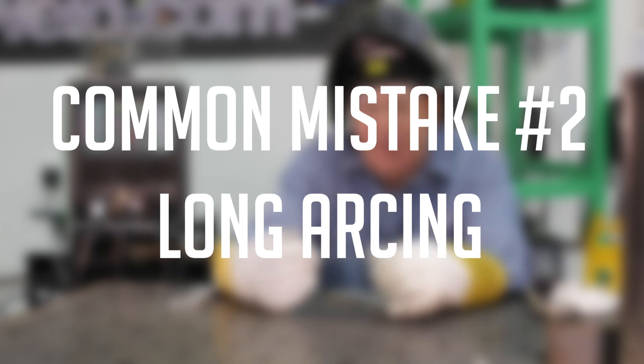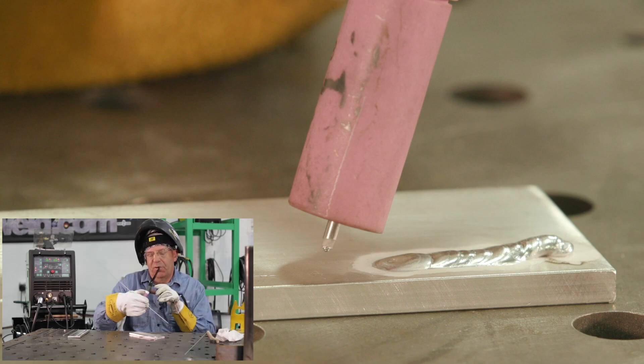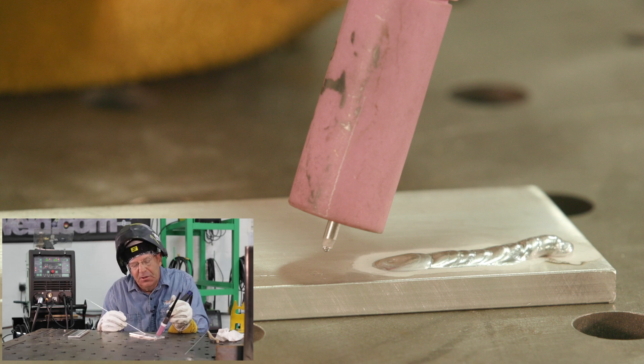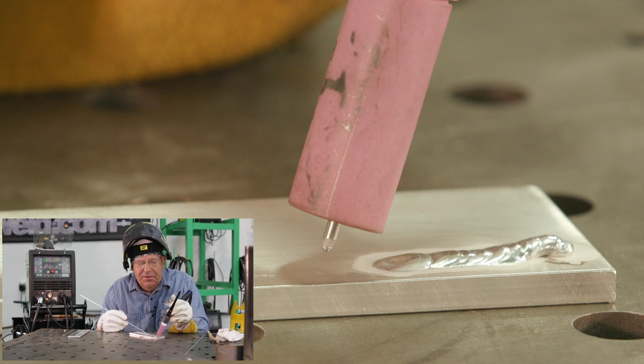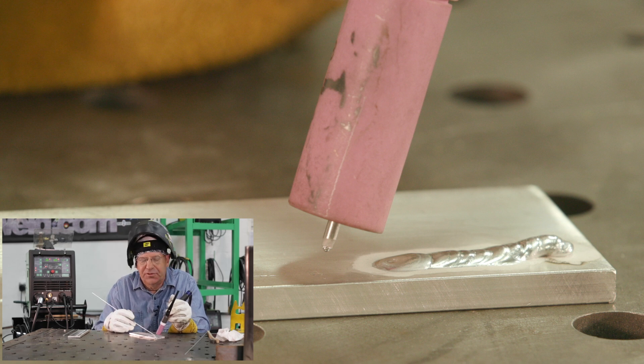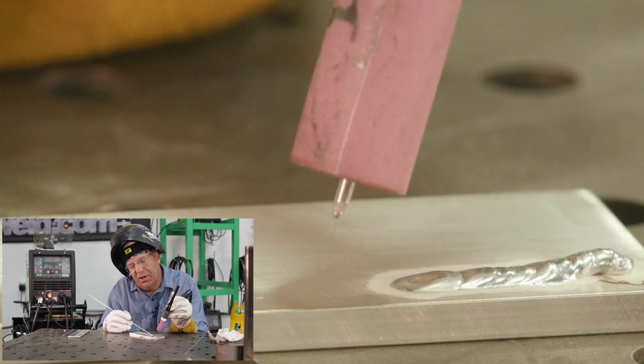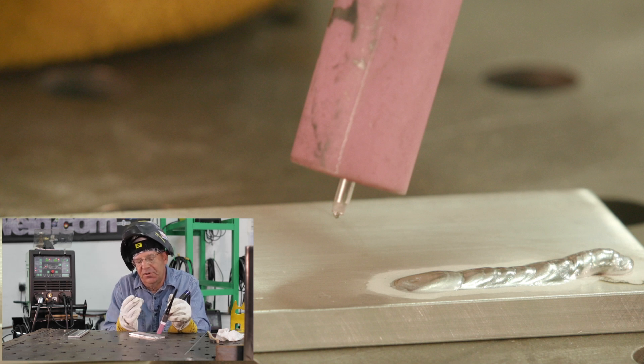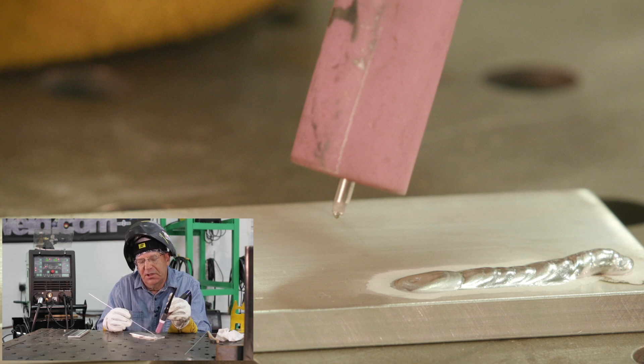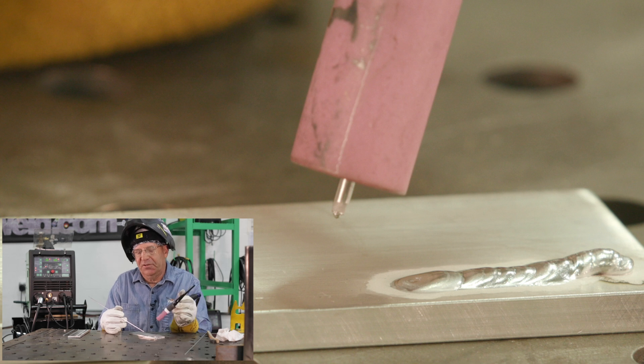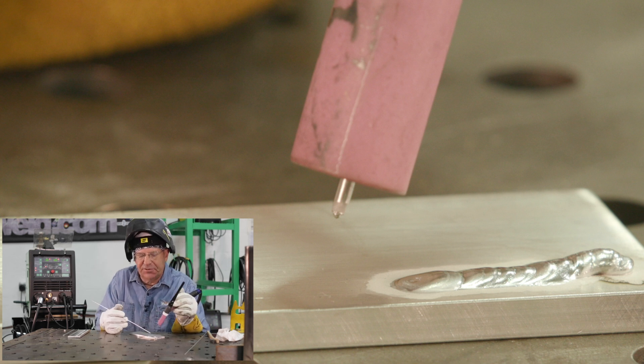The next mistake a lot of people make, myself included, is long arcing. In aluminum, we like to keep our arc length about three-sixteenths or a strong eighth inch, so that as we add wire the weld pool crowns up a little bit. But if I long arc, I'm way up here. I don't have any control of what the arc is going to do as far as forming the pool. I'm also probably going to see wire come off and melt but not really go in and form a bead. I'm more of a too short of an arc guy, and we'll talk about that in a minute. Let's see what happens with long arcing.